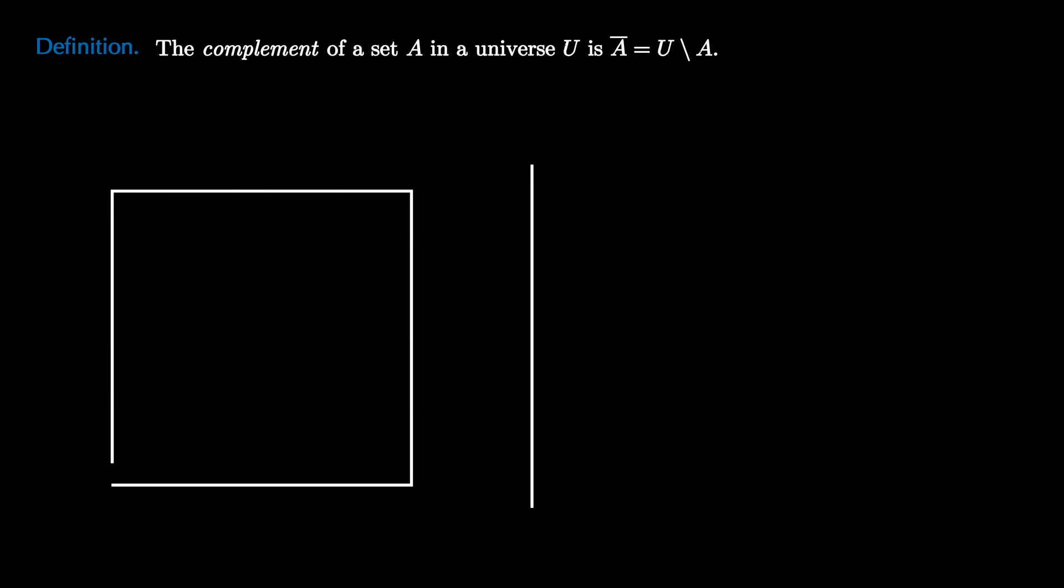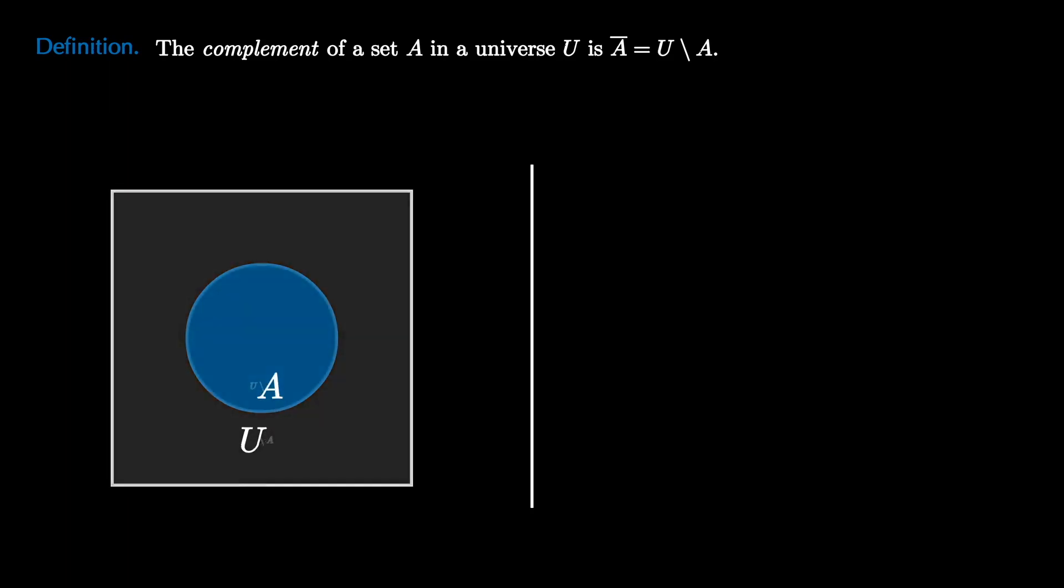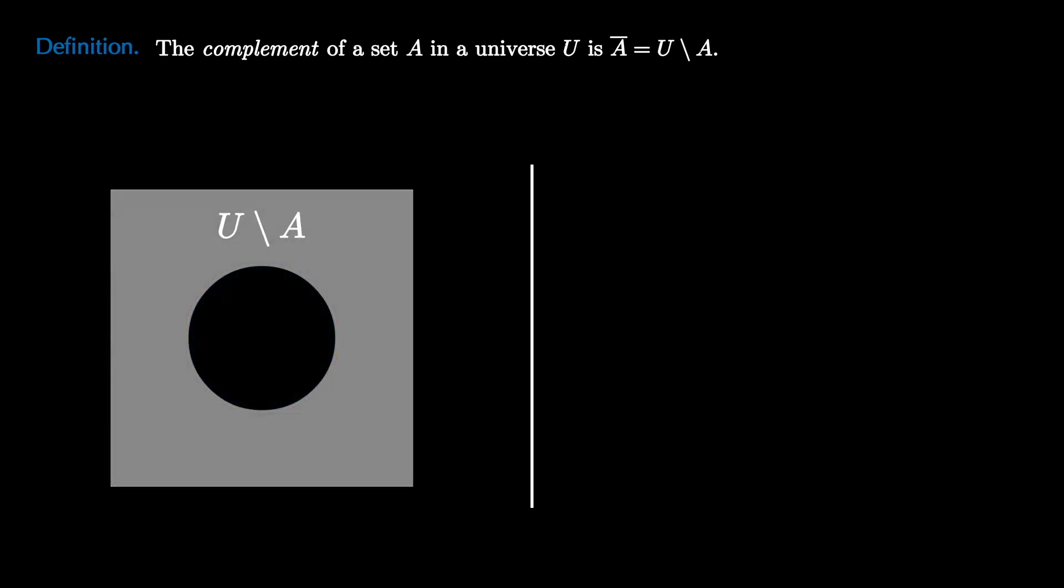Let's look at one more set operation, as well as the Venn diagram for three sets. The difference set connective is strongly related to the NOT connective from logic. The complement of a set A in a universe U is the collection A bar, which is the set U set minus A. This represents the collection of all the things that are in the universe and not in A, as pictured here.